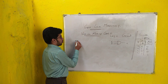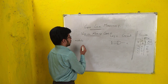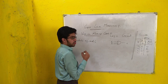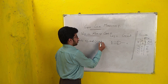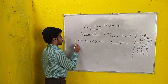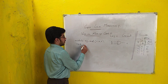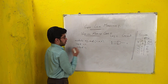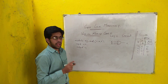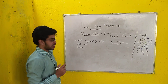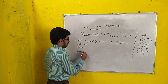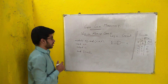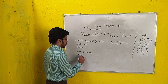Start with the module keyword. Write any name — I will take it as 'my_and' — followed by the outputs and inputs: C, A, B. Then assign the inputs: input A, B. Then assign the output: output C. Since it is an AND gate, AND is a primitive that Verilog understands, so just specify AND, followed by the output, then the input. The module has started, so it needs to be ended with endmodule.